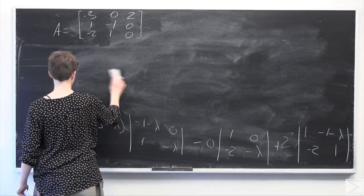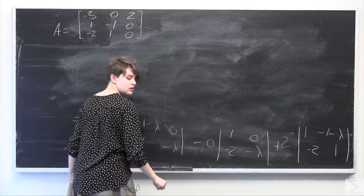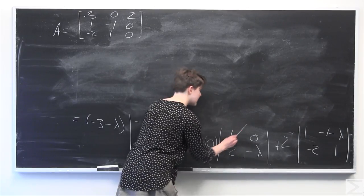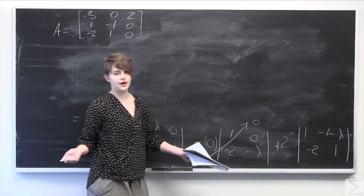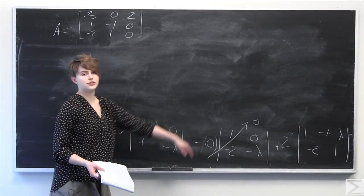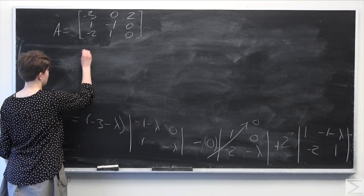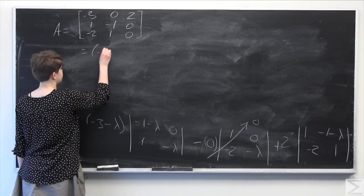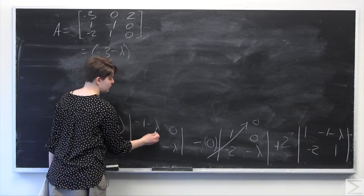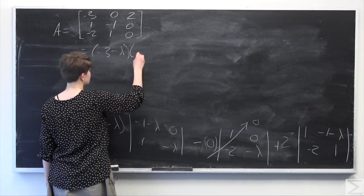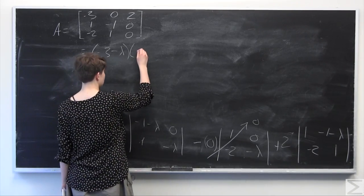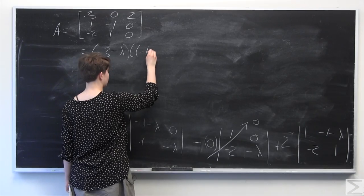As you can see, we have a 0 on the outside of the middle term, so that entire term goes to 0 — we don't need to calculate that 2 by 2 determinant. We just deal with the first and last terms. So this equals negative 3 minus lambda times, in nested parentheses, negative 1 minus lambda quantity minus negative lambda.